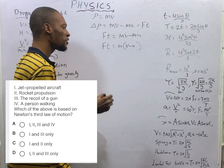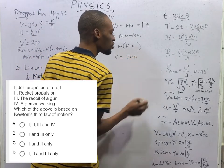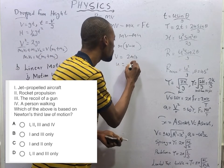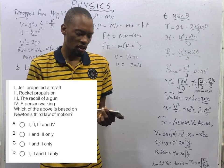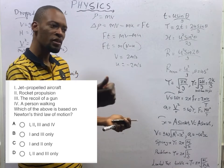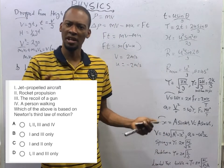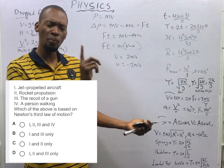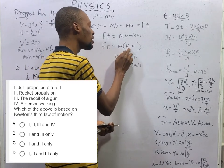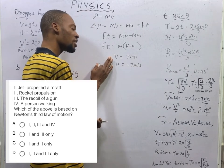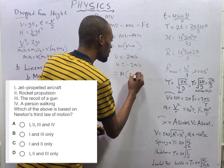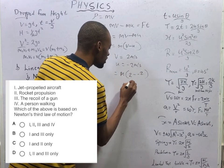If a body moves at 2 m/s and bounces back at the same speed in the opposite direction, the return velocity is taken as −2 m/s. So the change in momentum equals M(V − U) = M(2 − (−2)) = 4M. The magnitude of the change in momentum is therefore 4M.